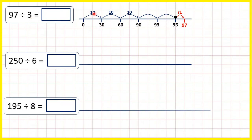So 97 divided by 3: we counted 10, 20, 30, 31, 32 steps of 3, but then we needed one more. So our answer is 32 remainder 1.